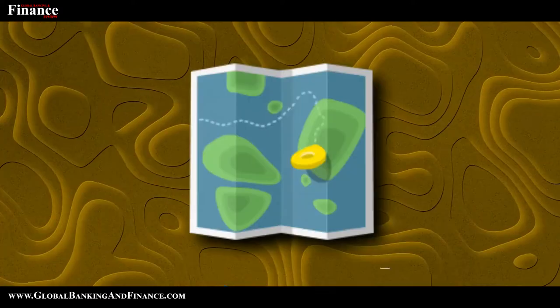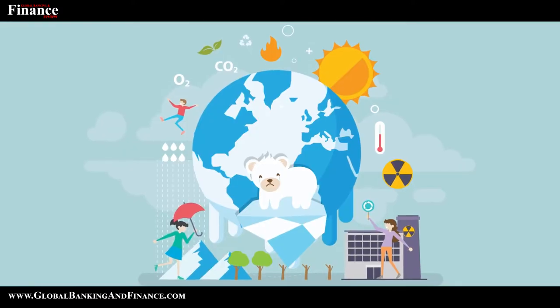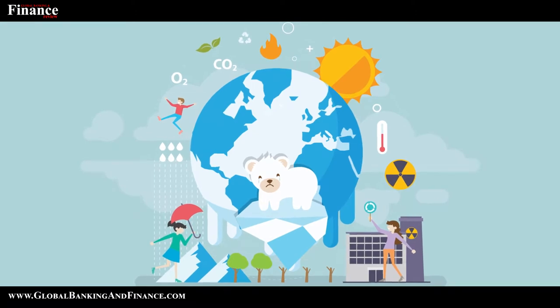For an ecosystem to thrive, apart from these essential components, topography, time and climate have a major impact.